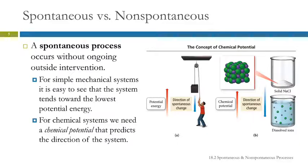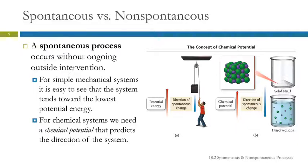Think about a ball or a rock rolling down a hill. It's going to roll down to go to lower potential energy, and when it gets to the bottom, it's going to stop. So if we're looking at chemical systems, we can think of a chemical potential, and if we had this quantity of chemical potential, we could use that to predict whether a reaction would be spontaneous or not — because if it went to lower chemical potential, it should be spontaneous.